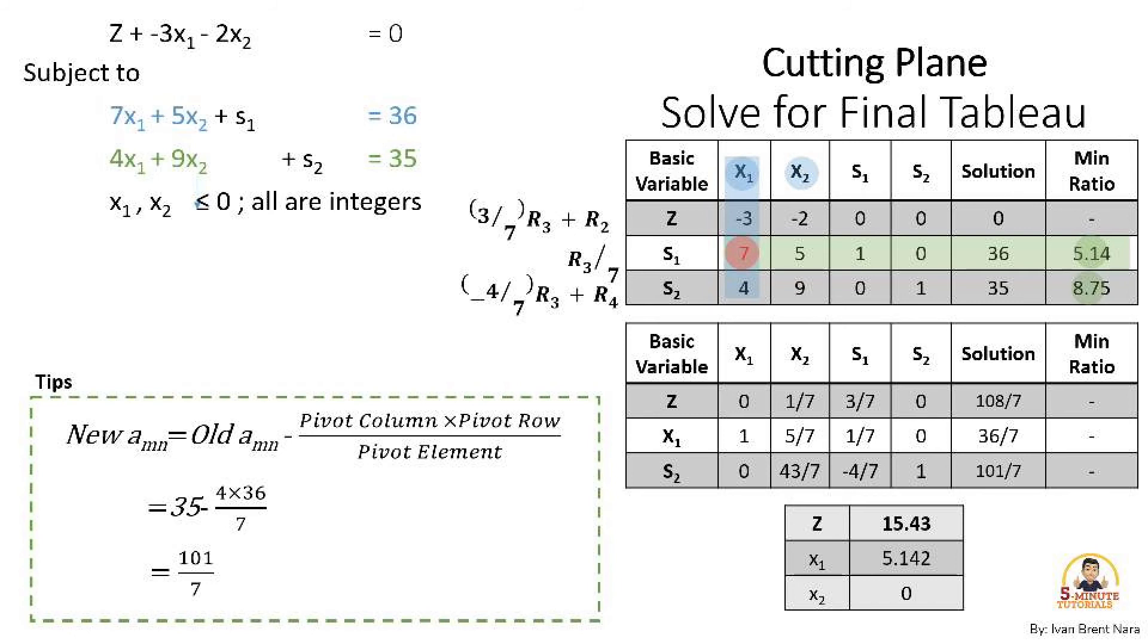Which is read by considering optimal values in the basic column that are in the right-hand side solution column. For example, we only have x₁ with 36/7 or 5.142 and a Z value of 108/7 or 15.428.